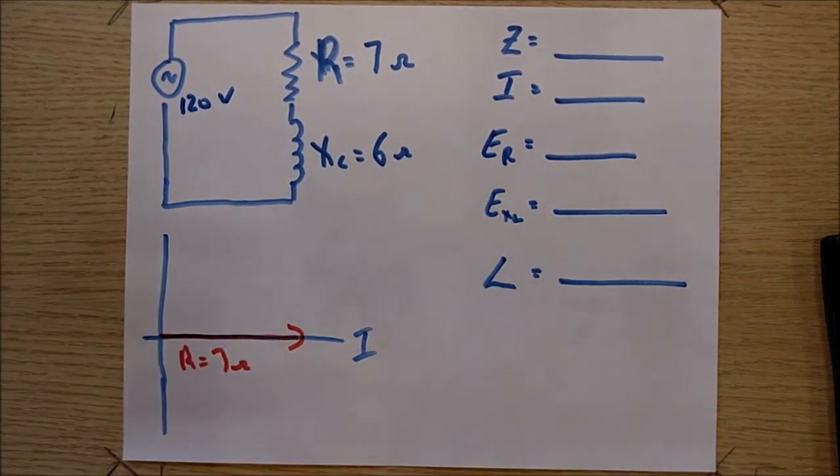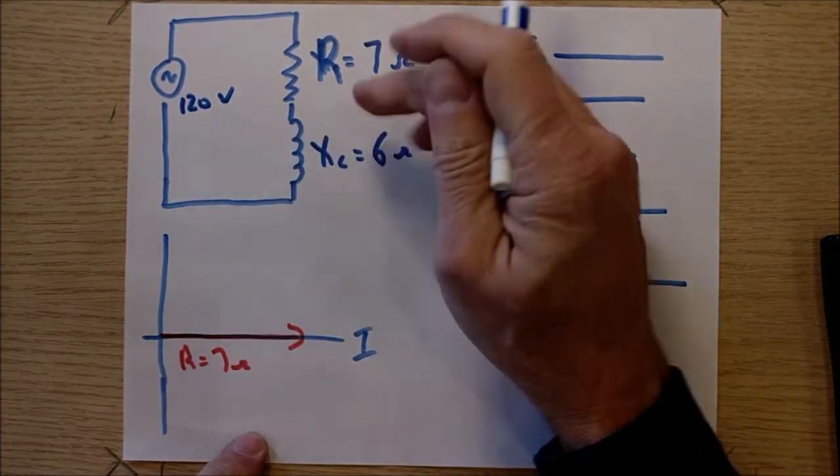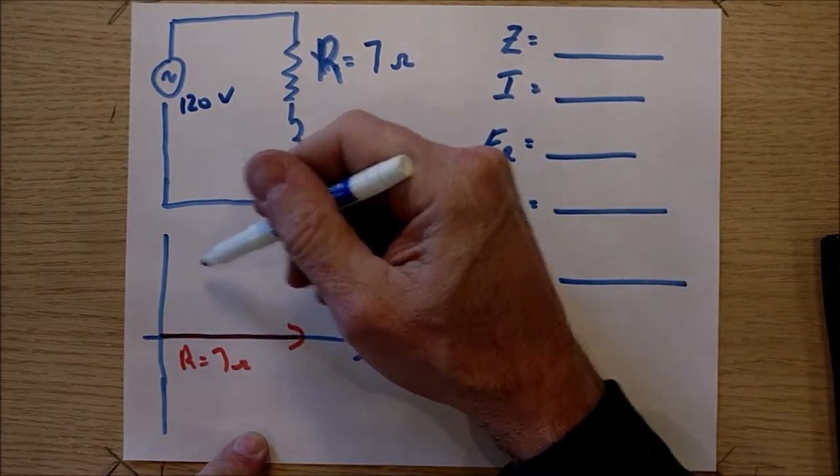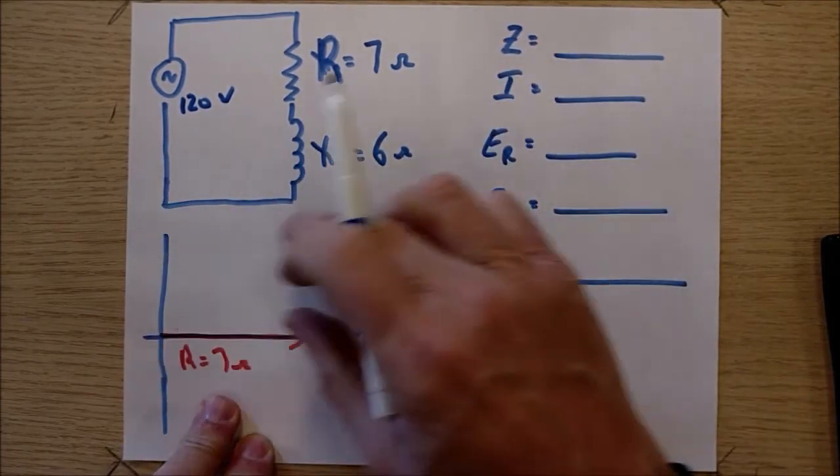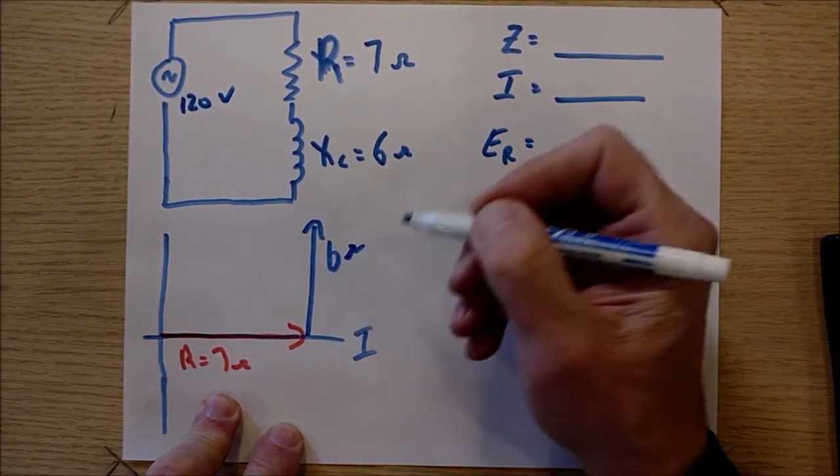The inductor is always going to be a vertical line. It's always going to be tip to tail. Since the current through the inductor is always going to lag, it's going to be drawn up so that the current is clockwise by 90, but I got to move it tip to tail. So it's going to go right here, 6 ohms.